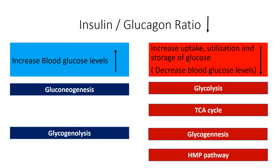Glucagon stimulates the pathways that increase blood glucose levels — gluconeogenesis and glycogenolysis — and inhibits the pathways that utilize and store glucose: glycolysis, the TCA cycle, glycogenesis, and the HMP pathway.